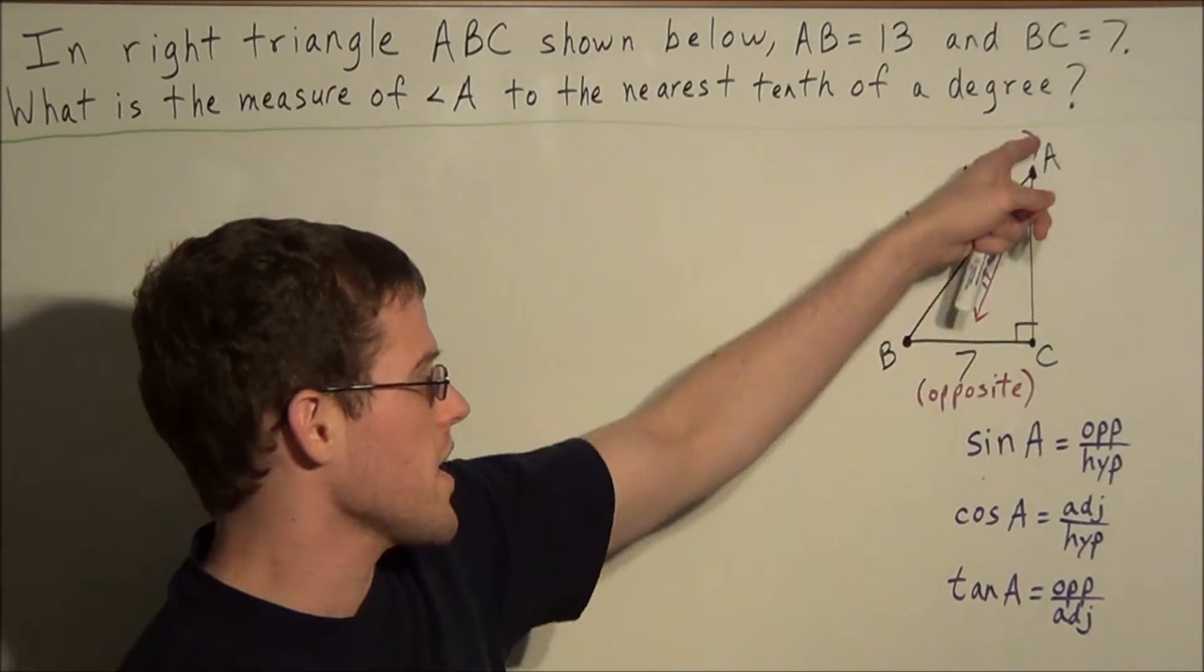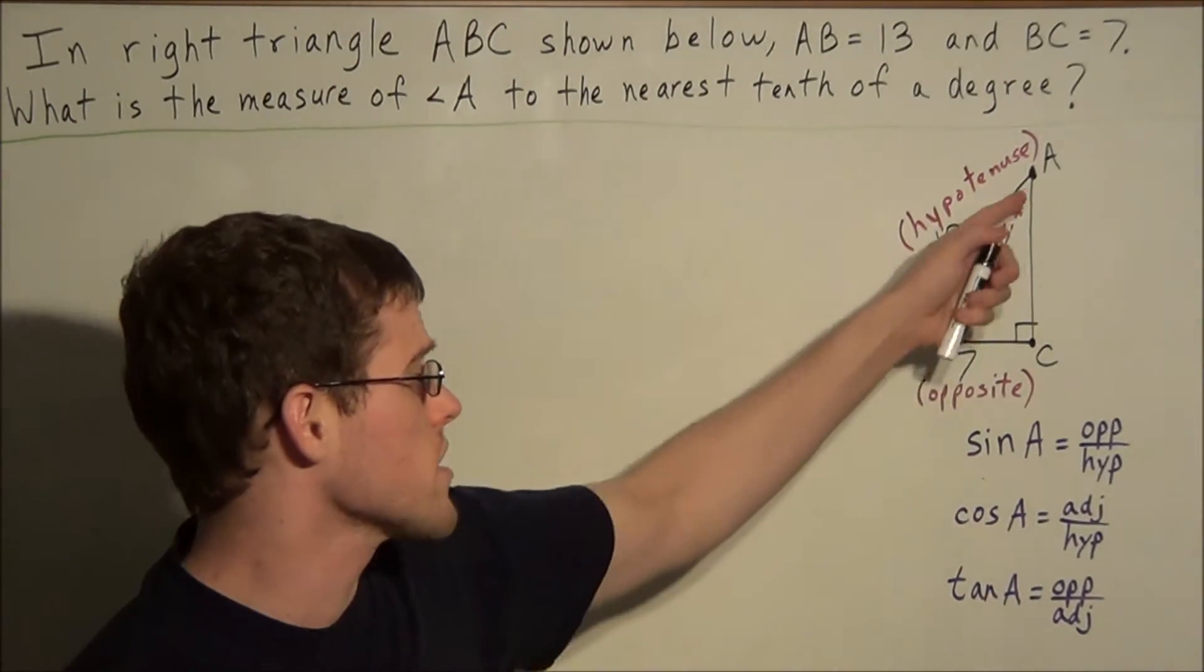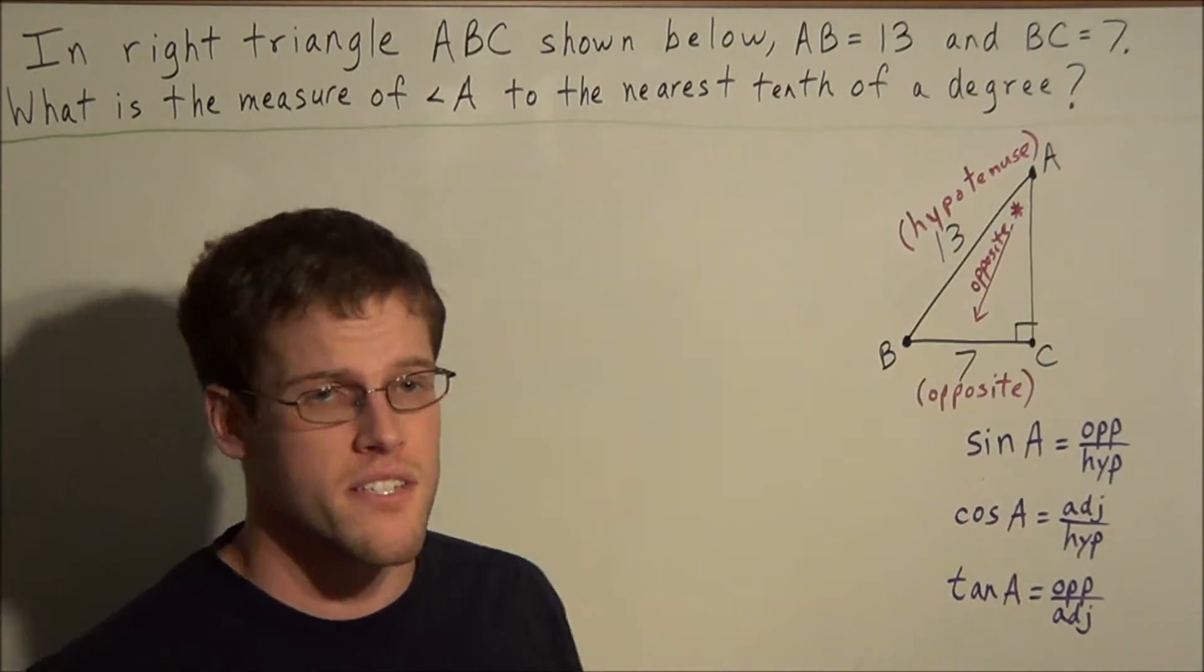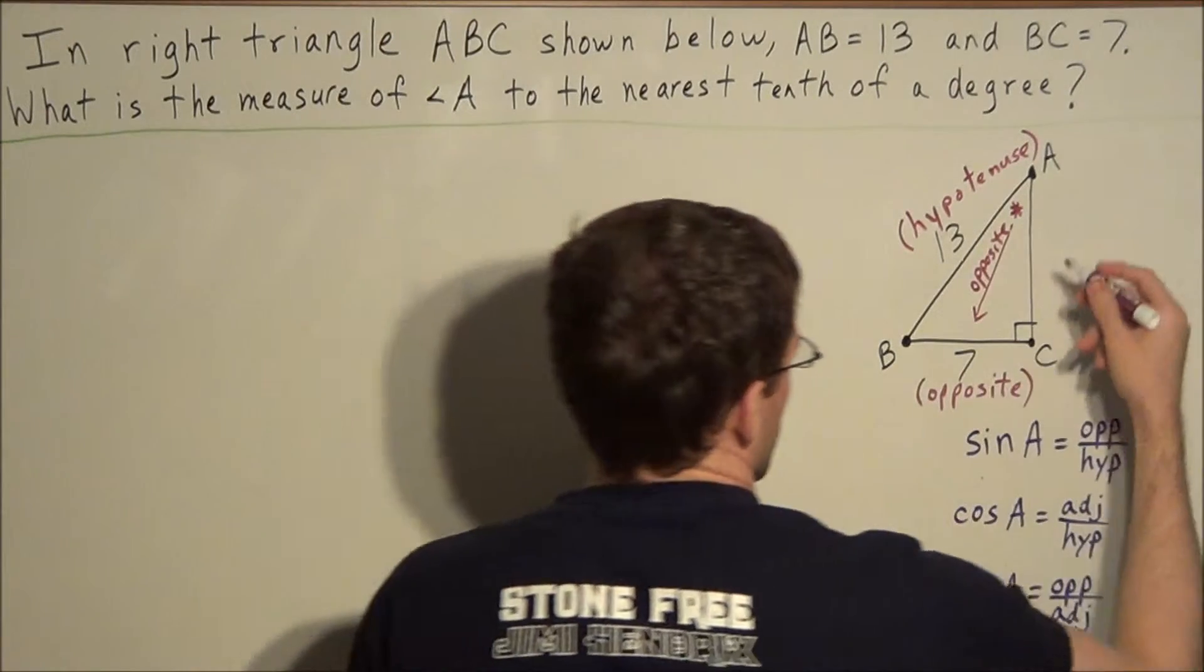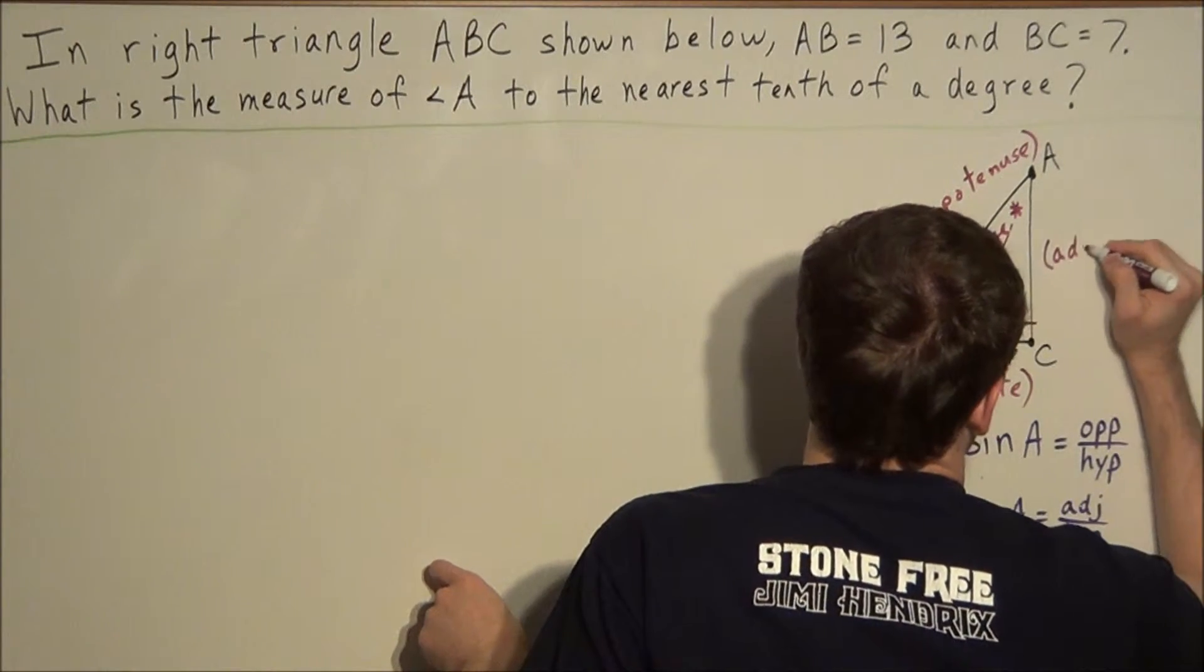And then finally, we look at the last side. AC would be adjacent to angle A. Another word for adjacent is next to, so we note that side AC is our adjacent side.